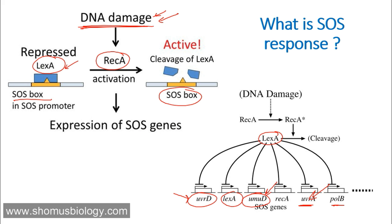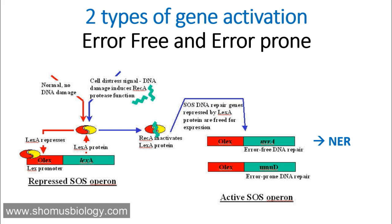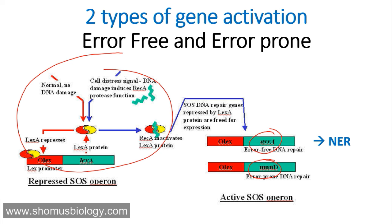As a result, two types of gene activation occur. Only two different sets of genes are activated: one is the UVRA type, and another one is the UMU type. The UVRA type genes are related to the process known as Nucleotide Excision Repair, or NER. Nucleotide Excision Repair cuts any damaged or erroneous nucleotide out of the DNA and then fills that gap with a proper, good version of the nucleotide. That is UVRA's job.